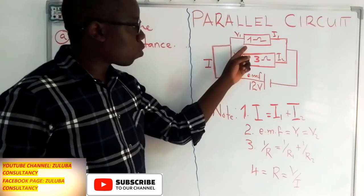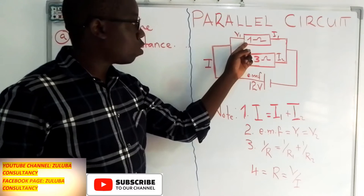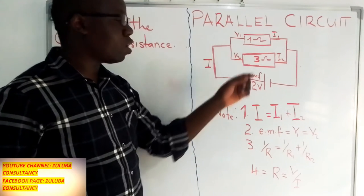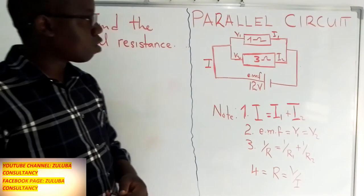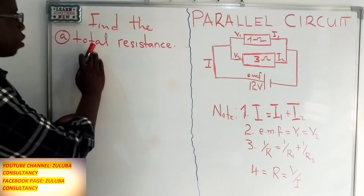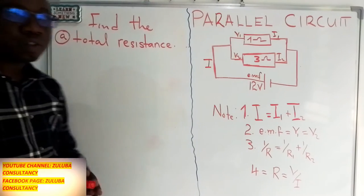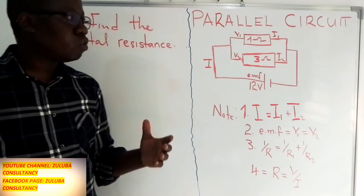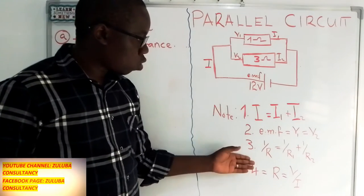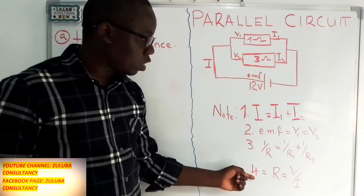We have an example of a circuit where the first resistor has 1 ohm resistance and the second resistor has 3 ohms. The first question asks us to find the total resistance. To calculate it, we look at equations 3 and 4, which both feature resistance, and we need to choose which one to use.